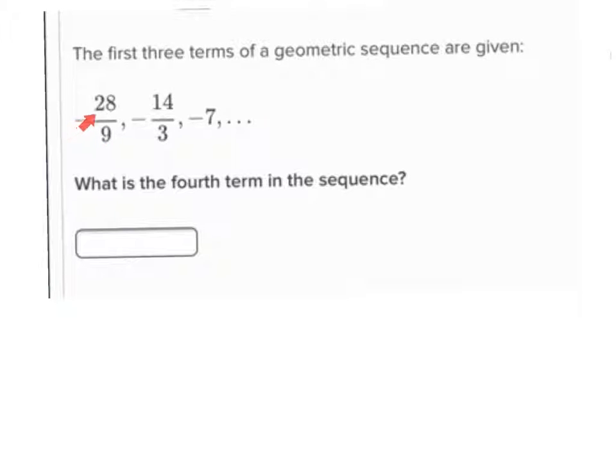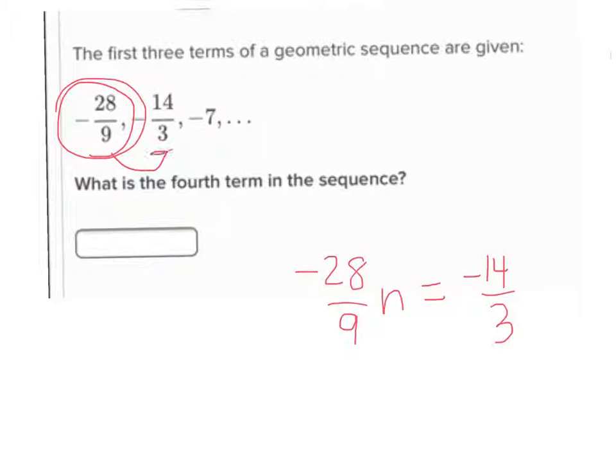And so here we have another geometric sequence. Our first term's negative 28 over 9, and then negative 14 over 3, and then negative 7, and they want the fourth term. So I can say negative 28 over 9 is being multiplied by some number n. We don't know what it is, and the result is negative 14 over 3, right?